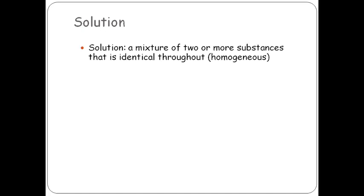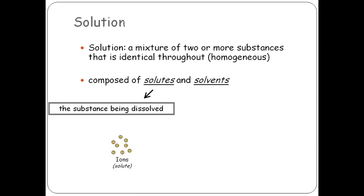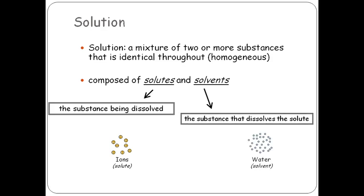Now let's talk about solution. A solution is a mixture of two or more substances that is identical throughout — so it is a homogeneous solution. It is composed of two components: one is solute and another one is solvent. The substance being dissolved, which is in less quantity, is called the solute, and the substance that dissolves the solute, which is always in excess quantity, is the solvent.